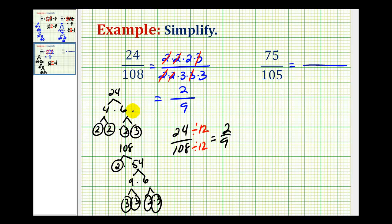And the more you make these prime factorization trees, the faster you get. 75 is equal to three times 25, which is five times five. So we have three times five times five.